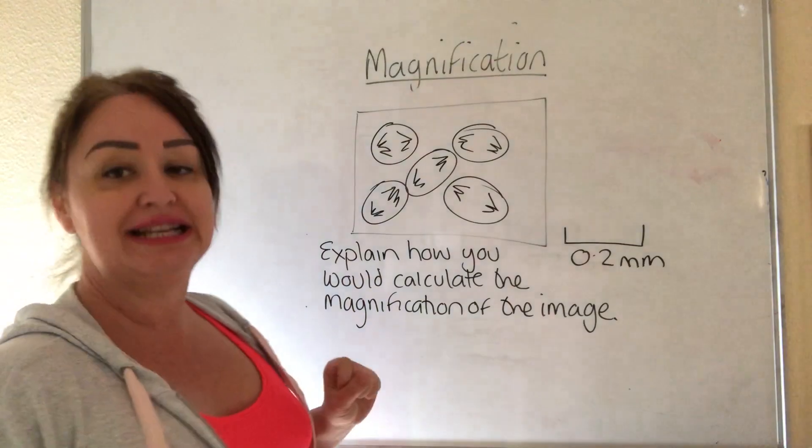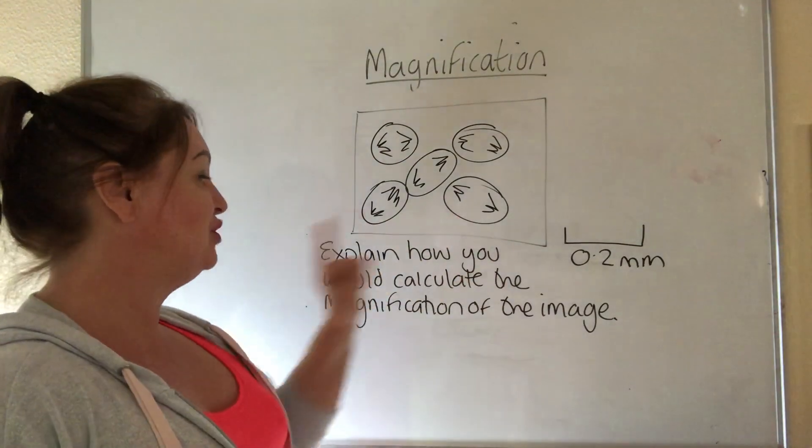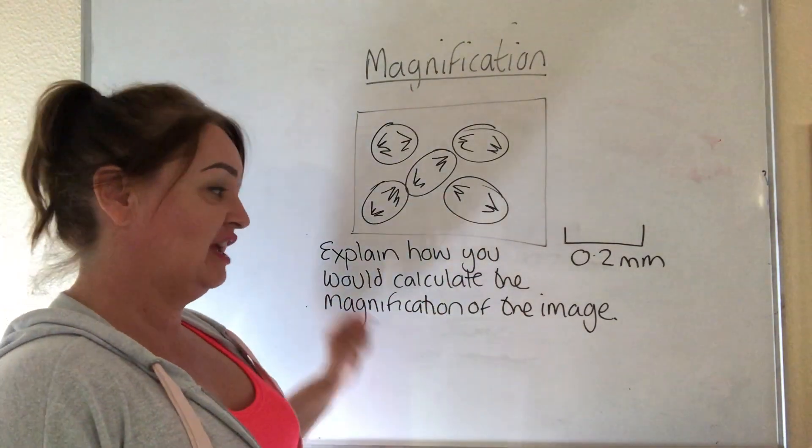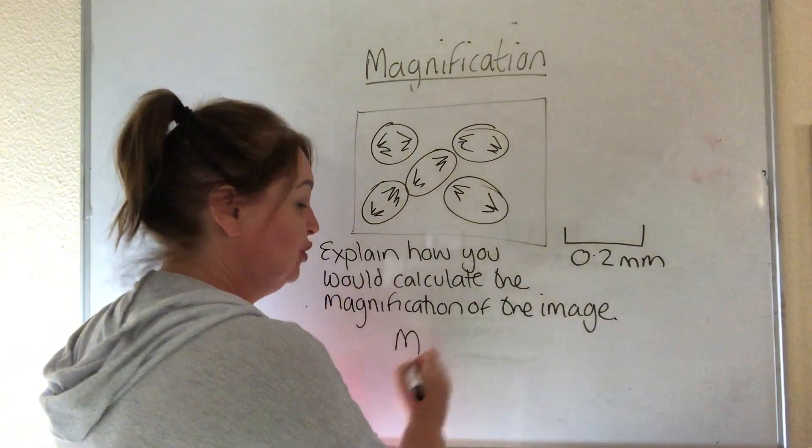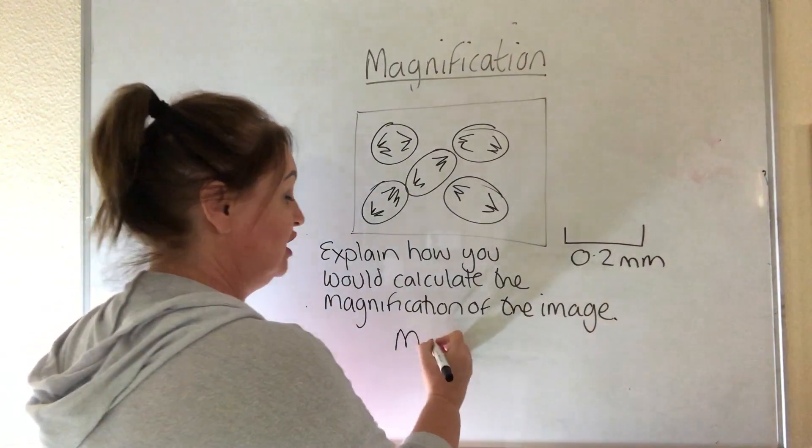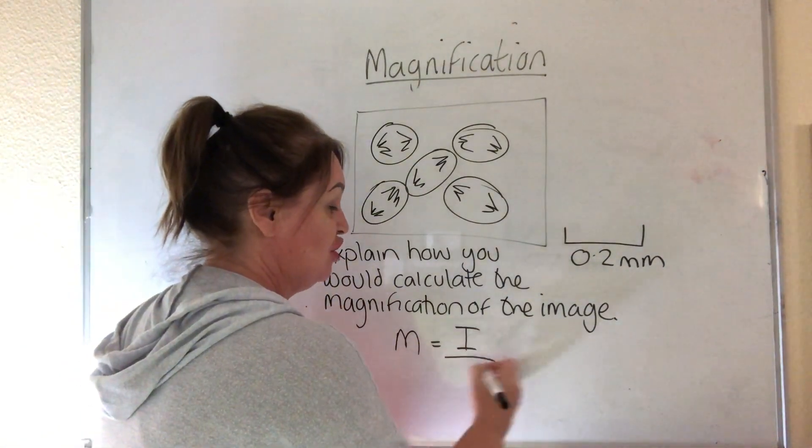So the question is specific. Explain how you would calculate the magnification of the image. Not any magnification. If it was any magnification we would just be talking about magnification equals image over actual.